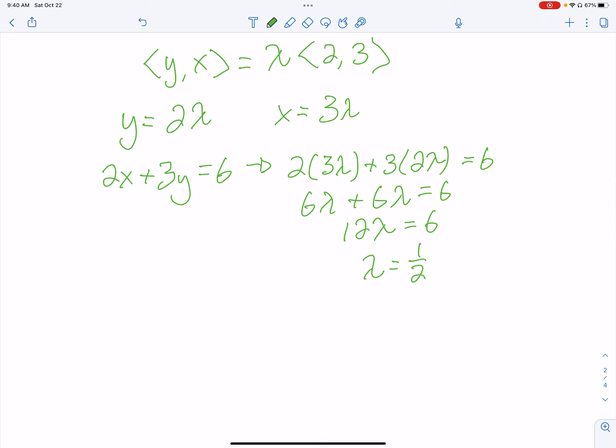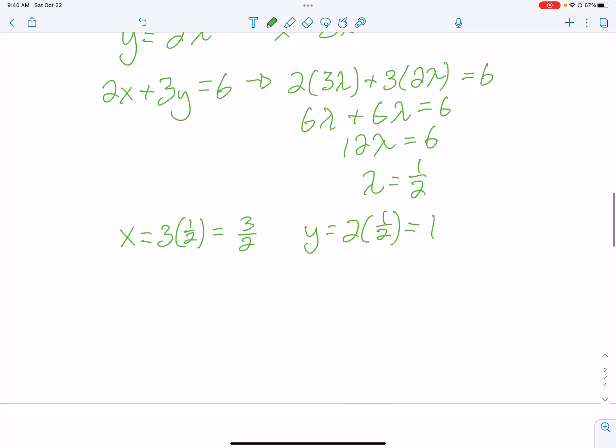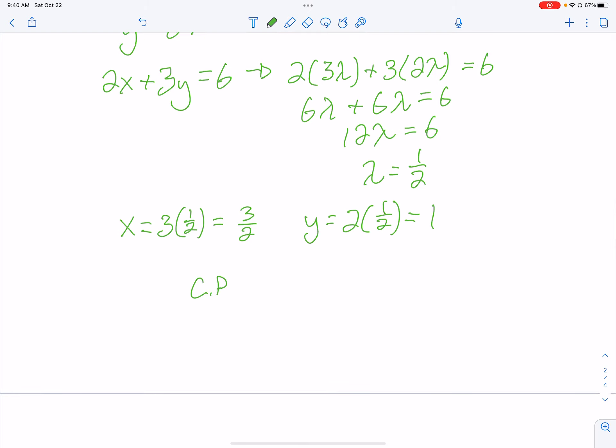So, what's great now is I can actually find my points where this minimum or maximum may occur. So, to get my point, I know x is equal to 3 times lambda, which is 1 half. So, 3 halves is x. y is equal to 2 times lambda, which is 1 half, and 2 times lambda is 1. So, we have a critical point at (3/2, 1).